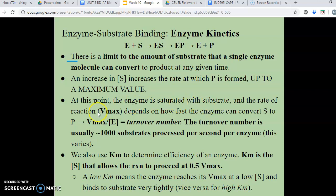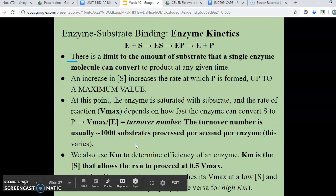And then the rate of reaction, which we denote as Vmax, V standing for velocity, depends on how fast the enzyme can actually convert the substrate into product. So therefore, an enzyme's Vmax divided by the concentration of the enzyme will give us its turnover number. And the turnover number is what we refer to as, how fast can the enzyme actually convert the substrate into product? And that's what we call turnover number. So the turnover number is usually about 1,000 substrates processed per second.